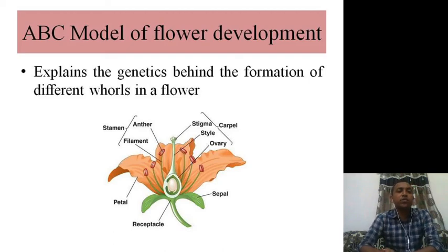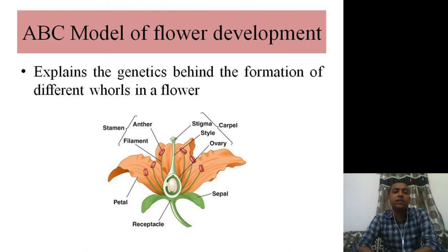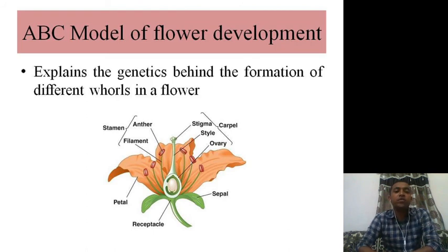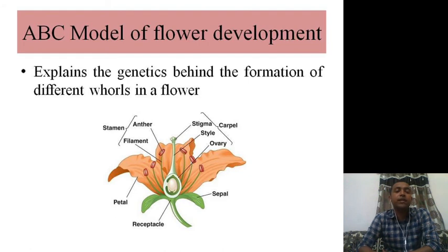Hello everyone. Today we are going to talk about the ABC model of flower development, which basically explains the genetics behind the formation of different whorls in a flower. In a flower there are four whorls: the first one is the sepal, the second is the petal, the third is the stamen — the male part, also called the androecium — and the fourth is the carpel, the female part, also called the gynoecium.